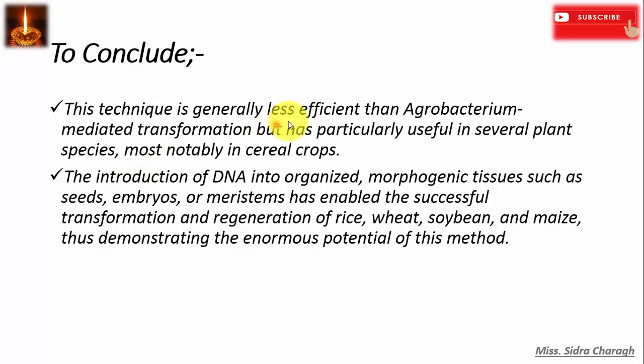This technique is generally less efficient than Agrobacterium-mediated gene transfer, but it has been particularly useful in several plant species, mostly cereal crops. The introduction of DNA into organized morphogenic tissues like seed embryos or meristems has enabled successful transformation and regeneration of rice, wheat, soybean, and maize, thus demonstrating the enormous potential of the biolistic transformation method.